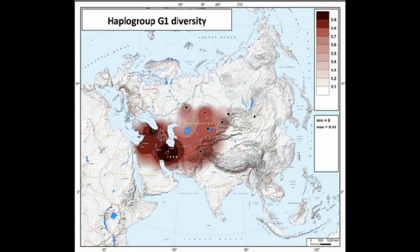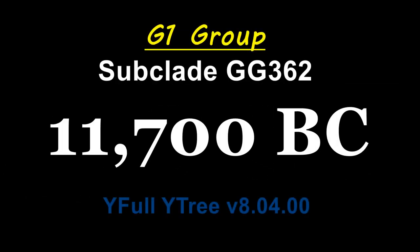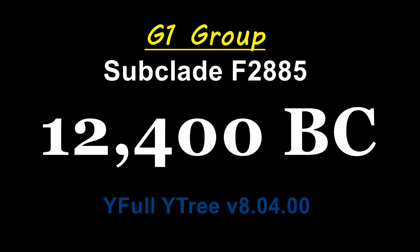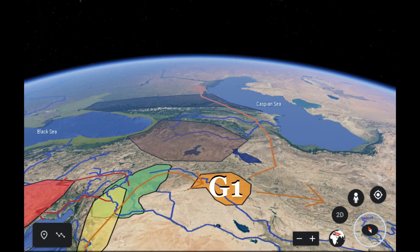Hunters learned that by controlling animals that they once pursued, they could have reliable sources of meat, milk, milk products, and hides for tents and clothing. By this time, the following G1 haplogroups would have arisen: L1324, which formed around 11,200 BC, as well as GG362, GG313, and F2885, which formed around 12,400 BC. Eventually, some of these groups would migrate north along the Caspian, while others would push along the Zagros Mountains and further east into the Iranian Plateau.